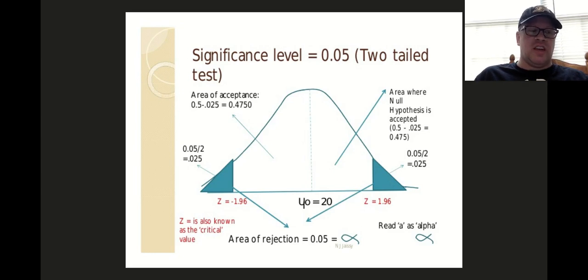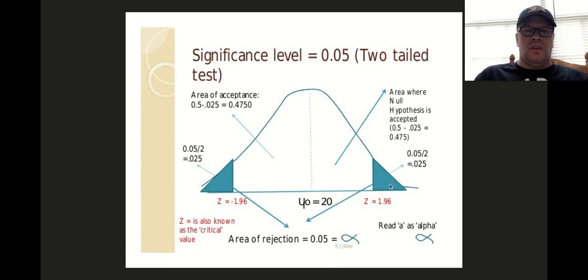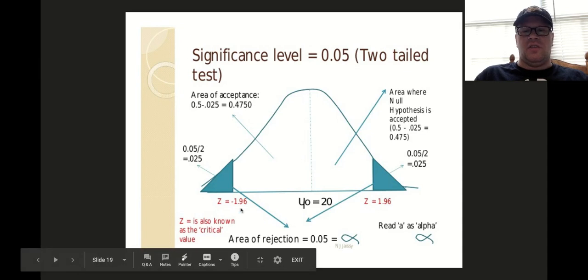So there has to be less than a 5 in 100 chance that the results were a fluke and otherwise a 95% chance that it was truly because of the independent variable. So these outer areas are going to theoretically represent the 5% chance that things just happen.